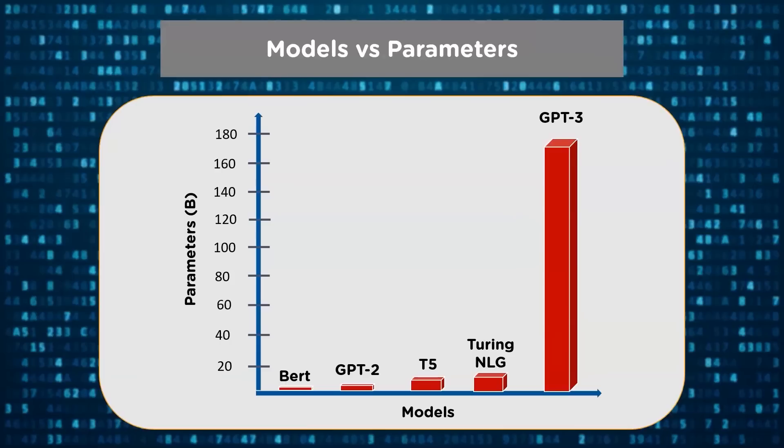The T5 model has 11 billion parameters. Next, Turing NLG, which is Microsoft's language model, had 17 billion parameters. But GPT-3 stands out among all the models with 175 billion parameters.